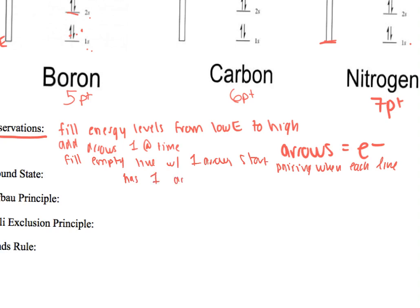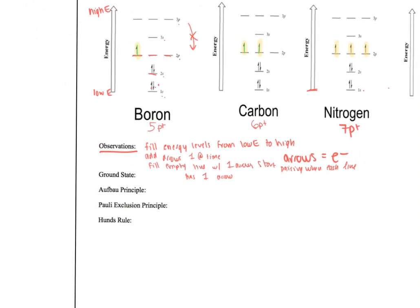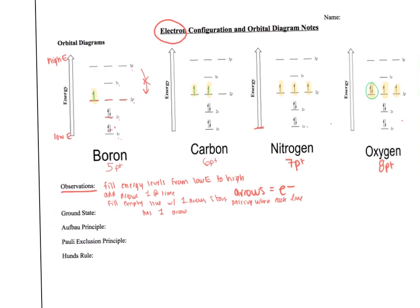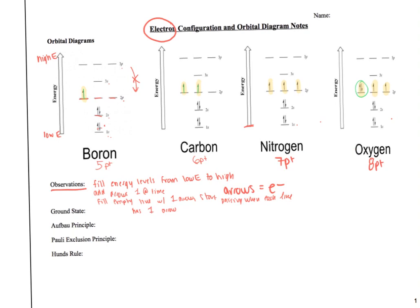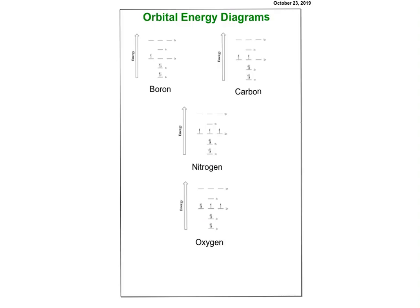The arrows represent our electrons. I also notice that when electrons are paired up, one is pointing up and one is pointing down. There are numbers and letters — all the s's have one line that can be filled, whereas the p's — 2p and 3p — appear to have three lines. I notice there's no 1p. Just some observations that might help us as we move forward.